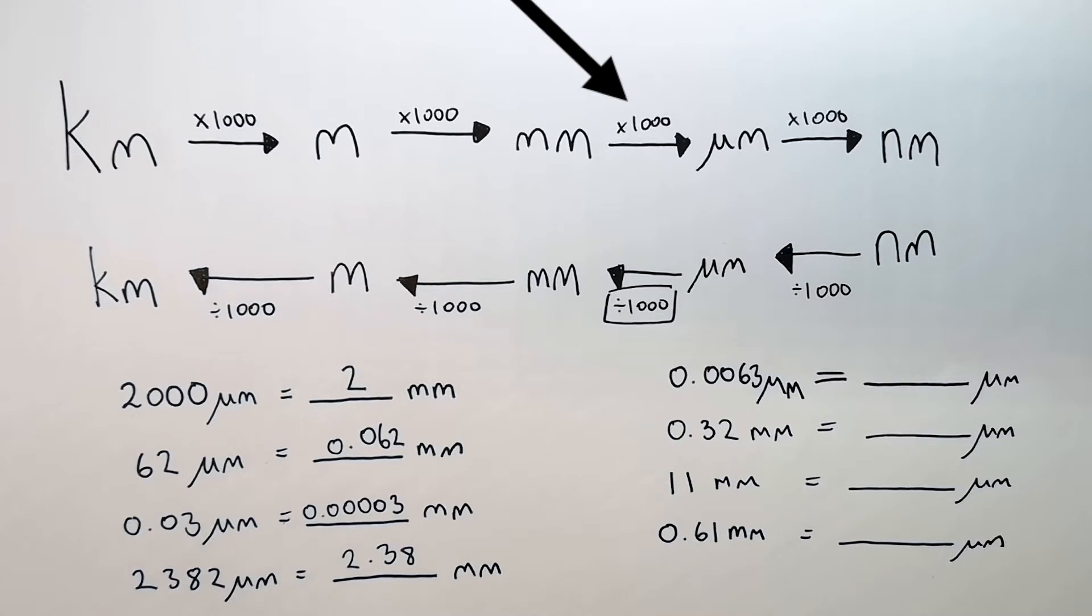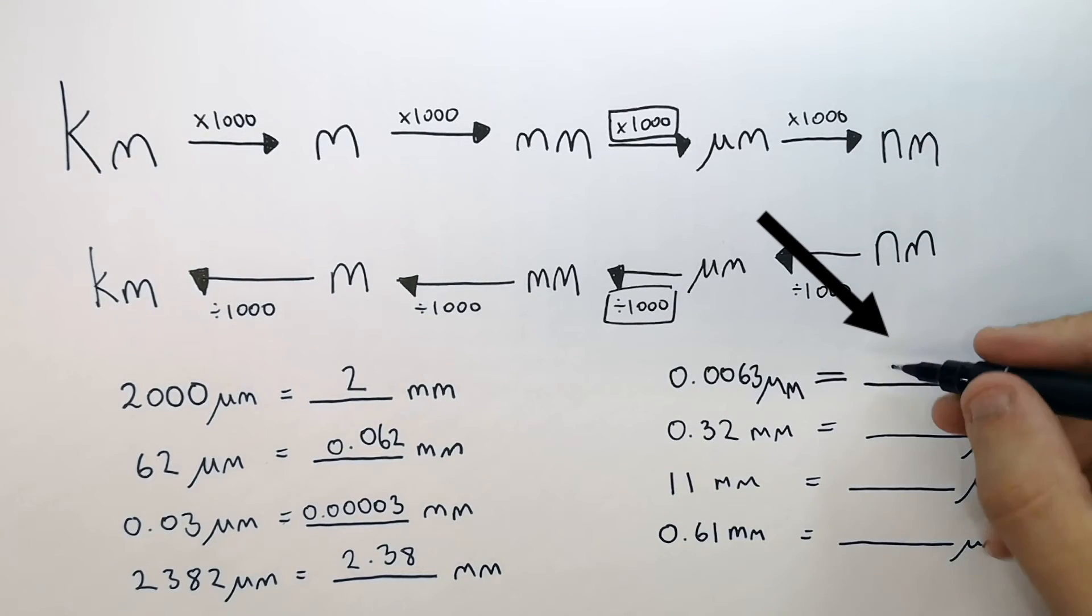To convert millimetres to micrometres, you must multiply the millimetres by 1,000. So you take 0.0063 millimetres and multiply by 1,000, and then you'll get 6.3 micrometres.